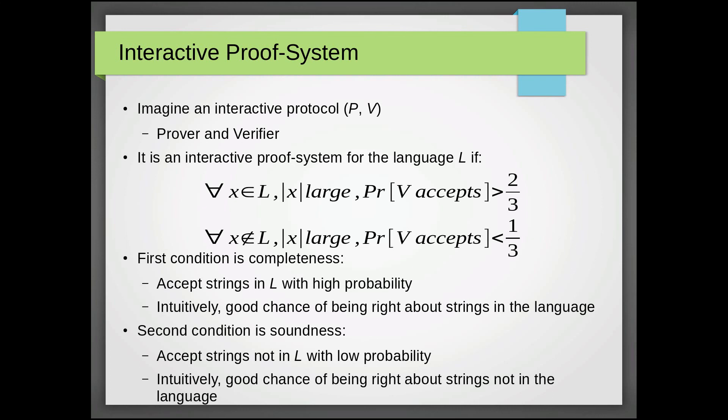The second condition is the logical idea of soundness. We accept strings not in L with low probability. And intuitively, we have a good chance of being right about strings not in the language. Strings not in the language are not accepted.